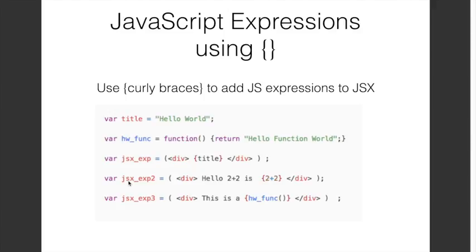Similarly, on the next line you have JSX expression 2, and here you are putting a mathematical expression — but since this is a JavaScript expression you can have it in curly braces. You can also embed function calls within JSX. We have a function here called hw function which returns hello function world, and we are calling it within JSX. So this entire line is JavaScript, within that you have JSX in brackets, and within that you have JavaScript in curly braces. This way we can make our JSX expressions dynamic.